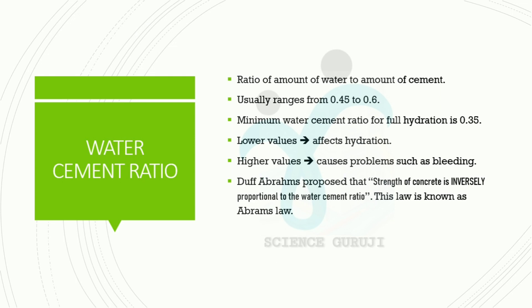Water-cement ratio is the ratio of amount of water to amount of cement, and the value usually ranges from 0.45 to 0.6. The minimum water-cement ratio for M20 is 0.35. Higher values cause problems such as bleeding. Duff Abrams proposed that the strength of concrete is inversely proportional to water-cement ratio, and this is known as Abrams Law — a very important previous year question.